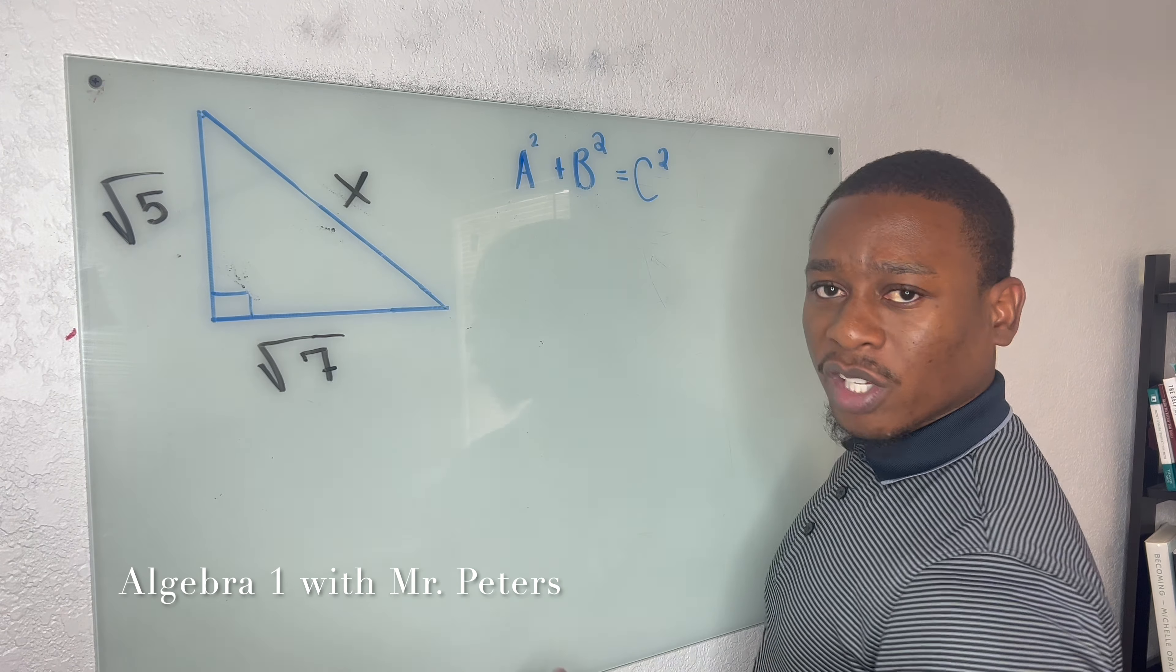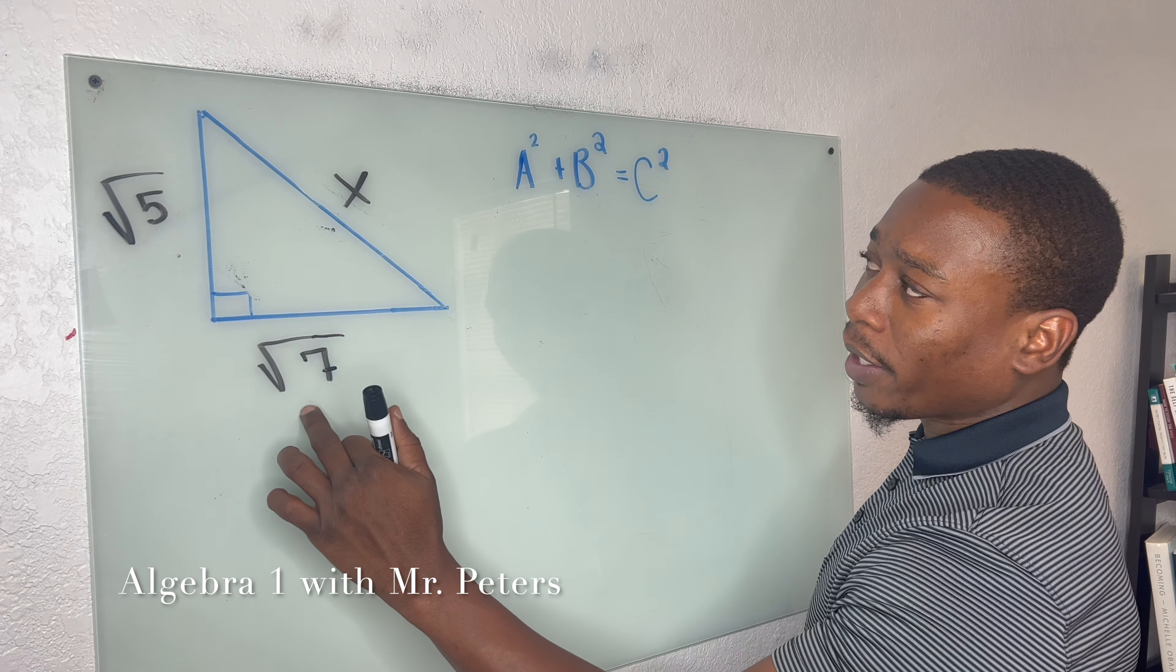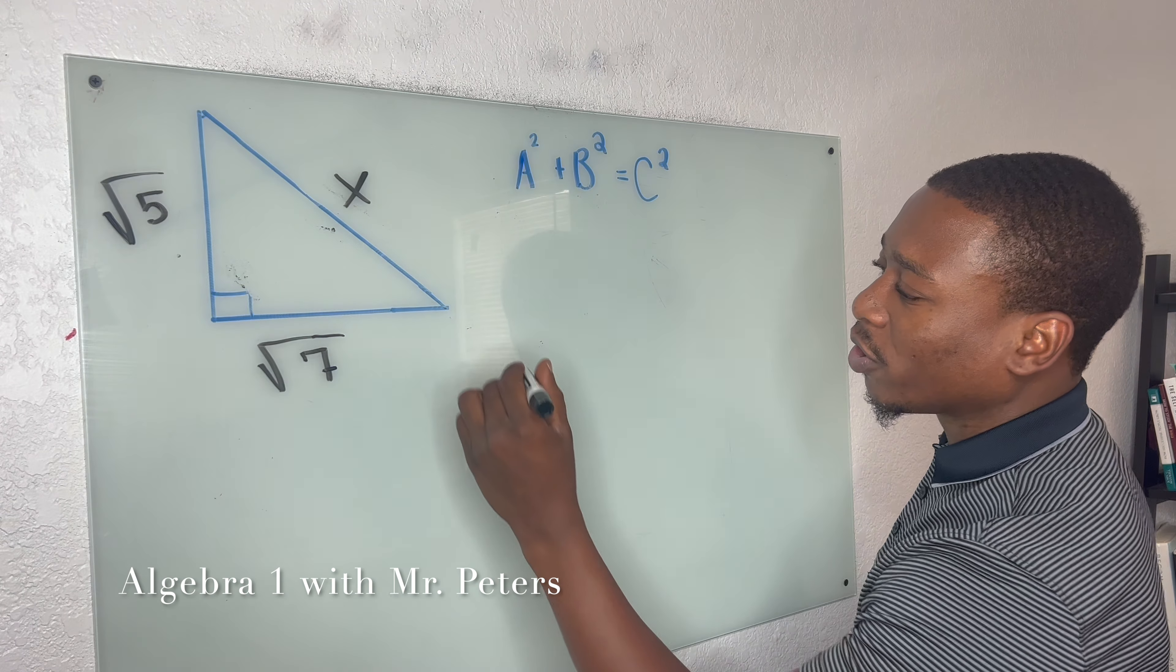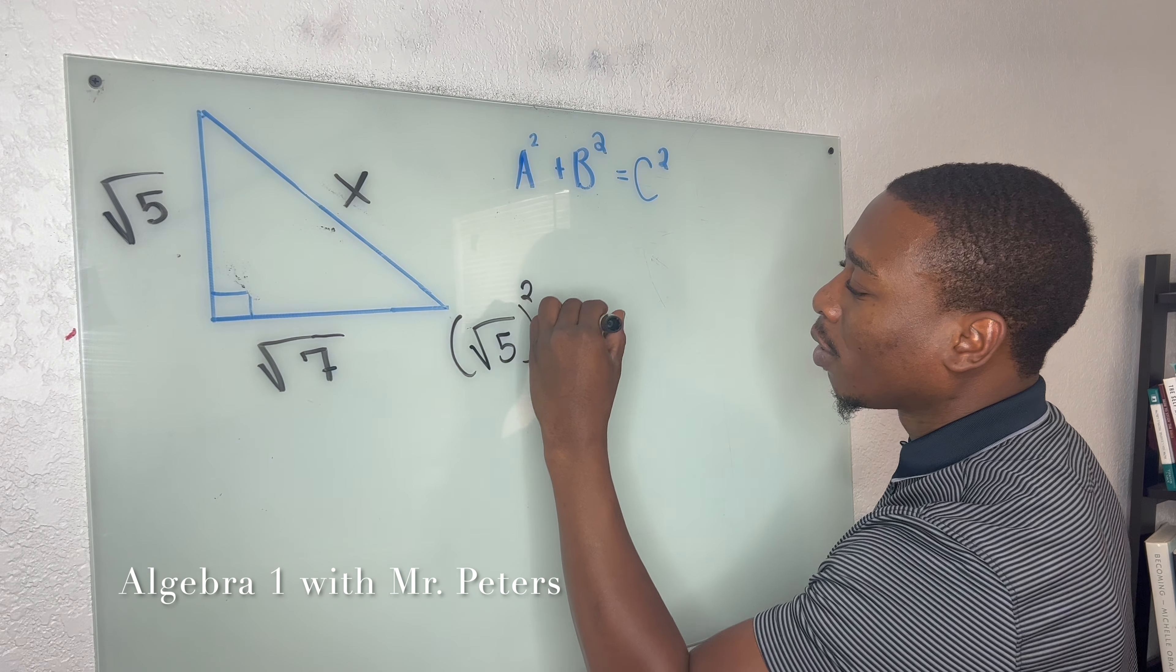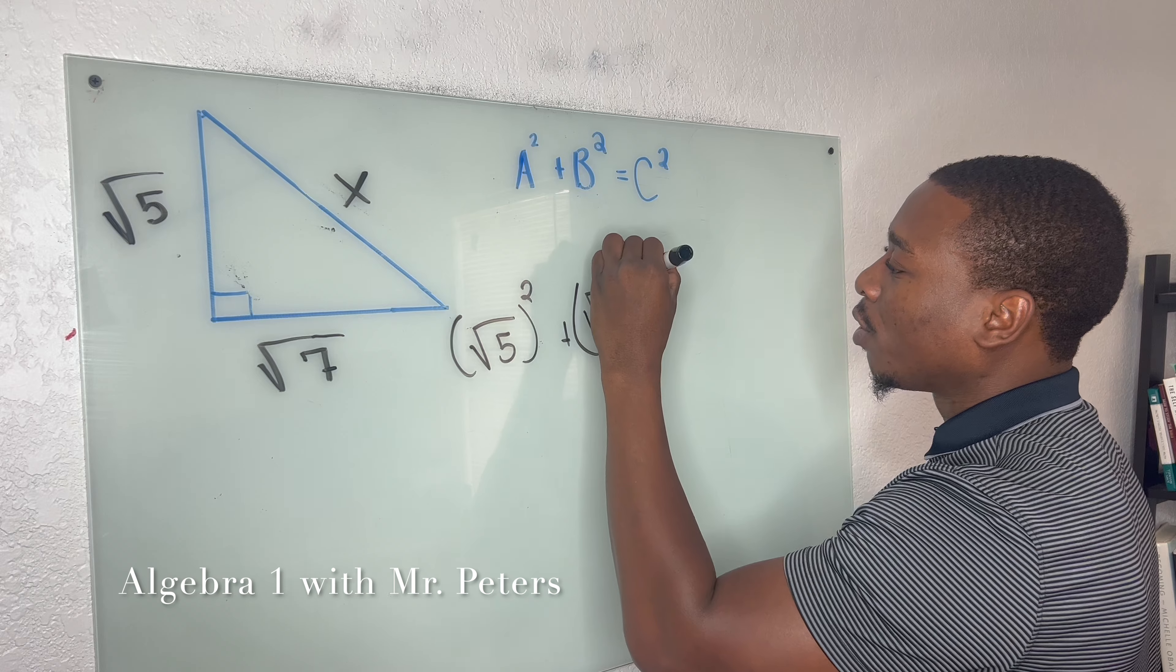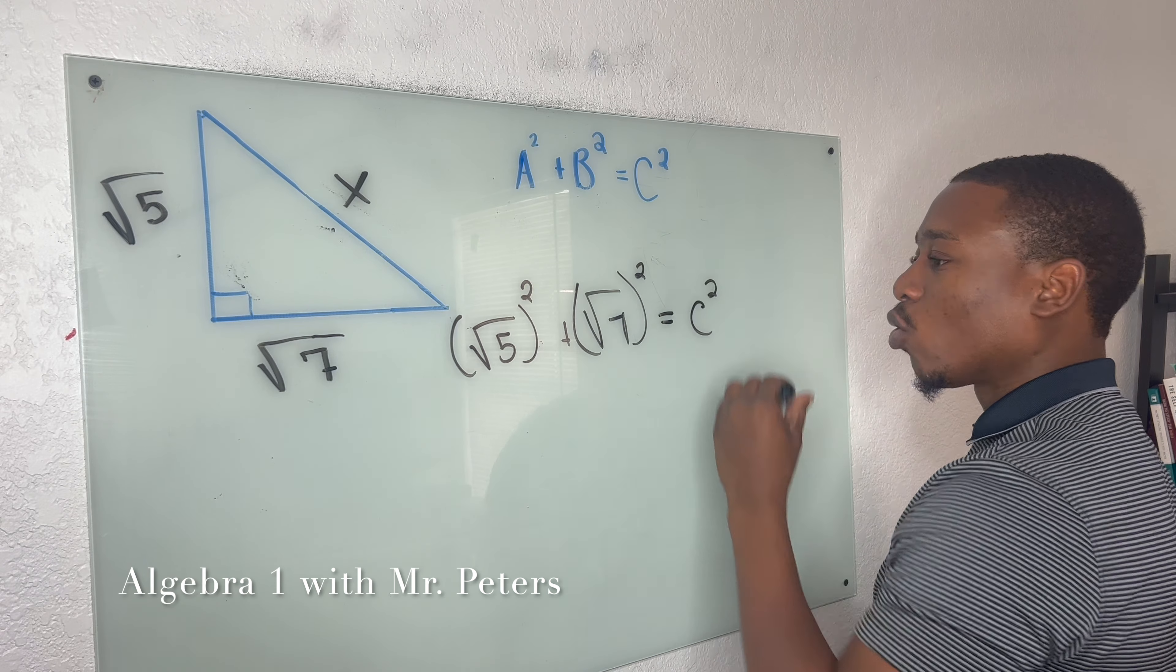In this problem, this is just a regular problem where we have A and we have B, and we're trying to solve for C. So we have radical 5 squared plus radical 7 squared, and this is equal to C squared.